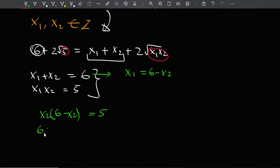What's that going to be? 6x2 minus x2 squared equals 5. So that's x2 squared minus 6x2 plus 5 equals 0.